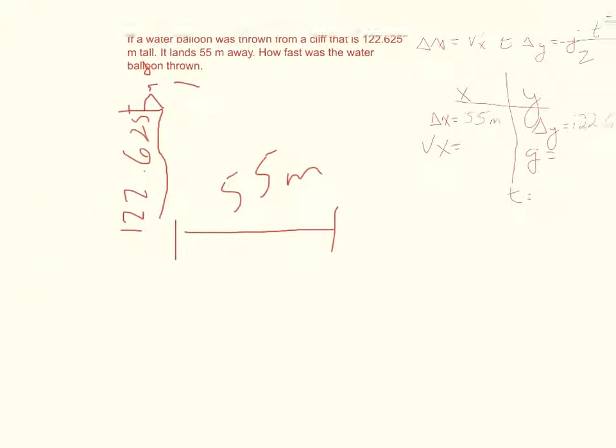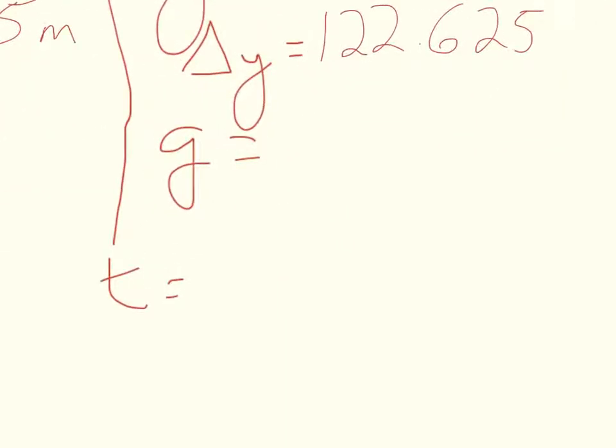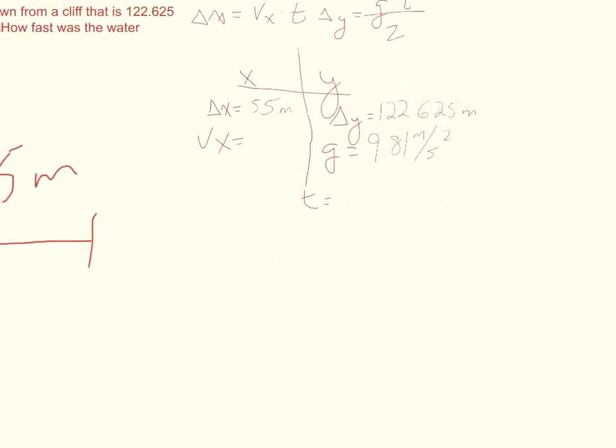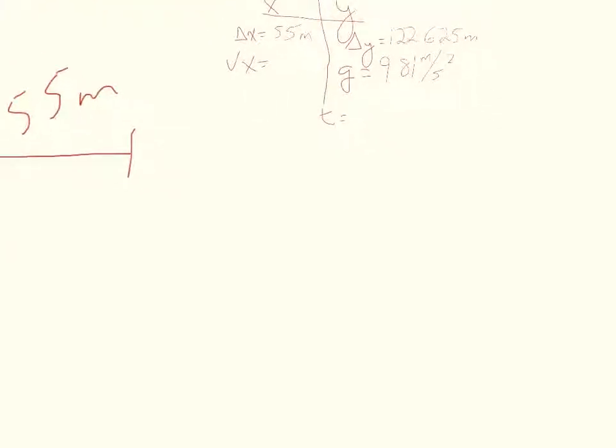I also know gravity, so I'm going to put that in there as 9.81 meters per second squared. And this is meters, and that is meters. I think that's everything that we know, so we're done with the variable list now and we just want to solve this equation.